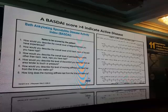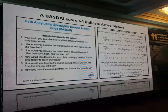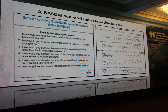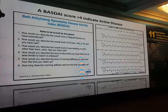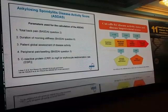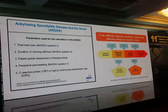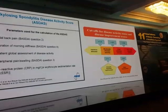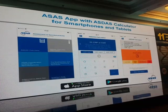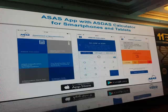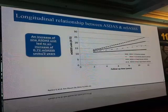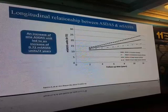The BASDAI score assesses disease activity — a score above four indicates active disease. It is a questionnaire subjectively assessed by the patient, and an Arabic translated form is available. The ASDAS combines some BASDAI questions plus one objective parameter, the CRP or ESR. It is available on your smartphone and can be calculated within two minutes. There is a close relationship between persistence of disease activity and bone destruction — the higher the disease activity, the greater the increase in mSASSS score.